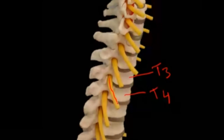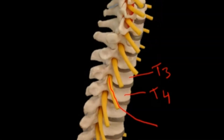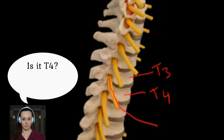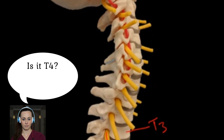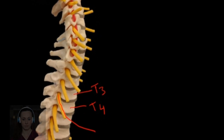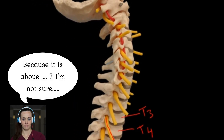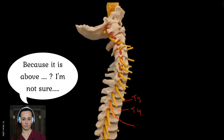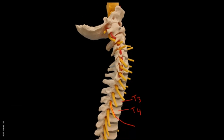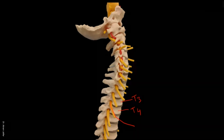What about this nerve? What is the number of this nerve? Why do you say it's T4 and not T3? So the nerves in the thoracic region, they arise below the vertebra which is corresponding in number.